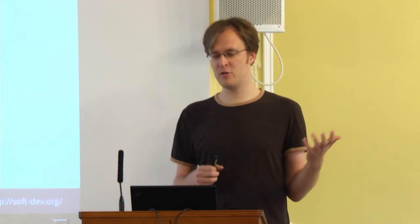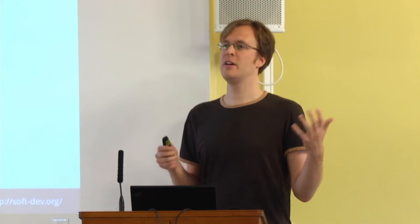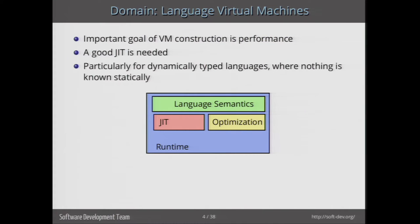That is particularly true if you have complex dynamic languages. You could argue the worst VM is Java, but for dynamic languages there's a lot of added complexity because it's so hard to know anything about what's happening at any one time just by looking at the code. An important goal for VM construction is performance, and you need a very good just-in-time compiler for that — particularly for dynamically typed languages where you don't know anything.